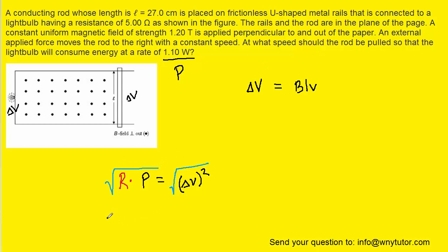And when we do that, we can see that the potential difference across the lightbulb is equal to the square root of the resistance and the power multiplied together.